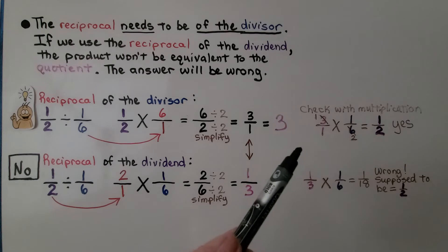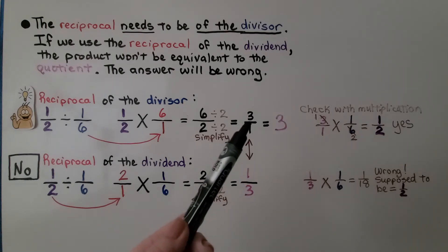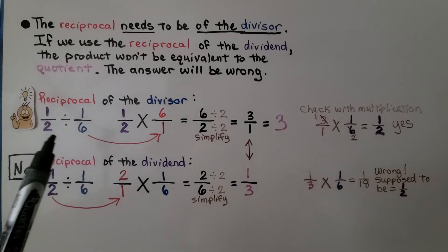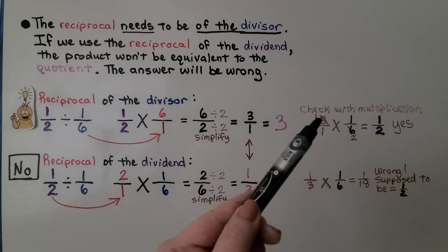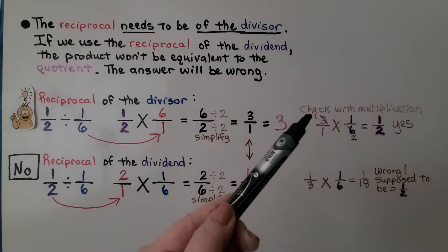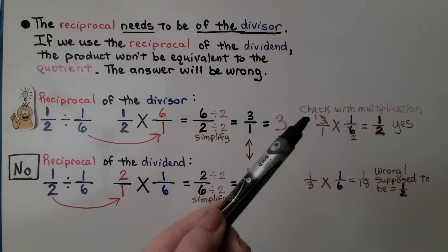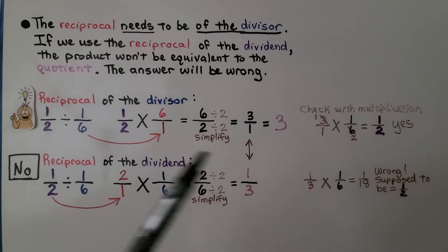We can even check this with multiplication. We have three over one times one-sixth, the divisor, and it should equal one-half. We can use cross-cancelling — we have a three here and a six here. Three times one is three, and three times two is six. We used three as our common factor. Now we multiply one times one, which is one. One times two is two. It's one-half, the same as our dividend. We know we did it correctly.